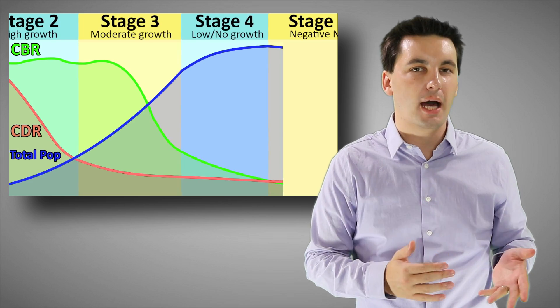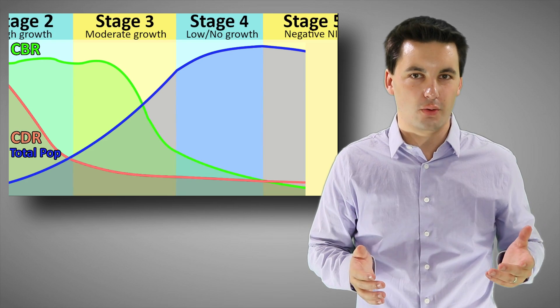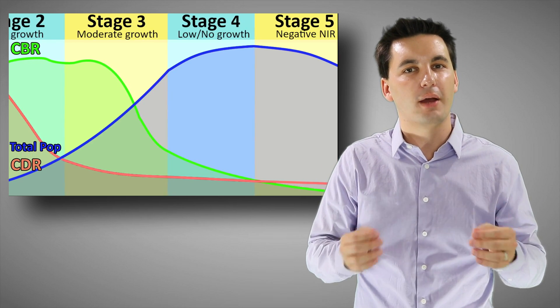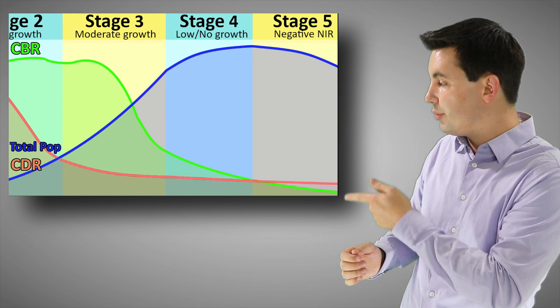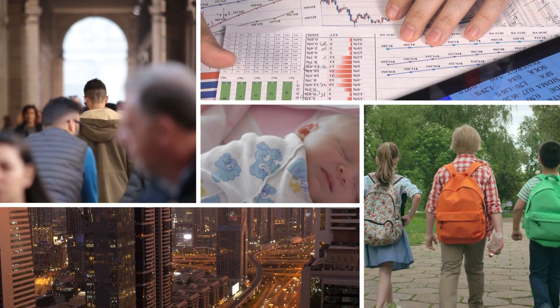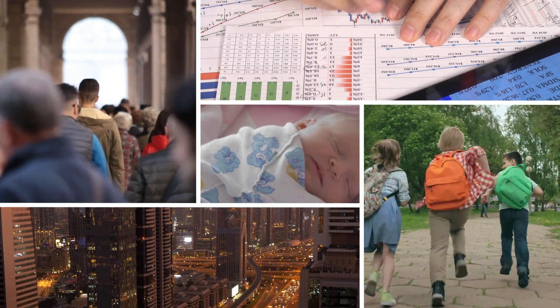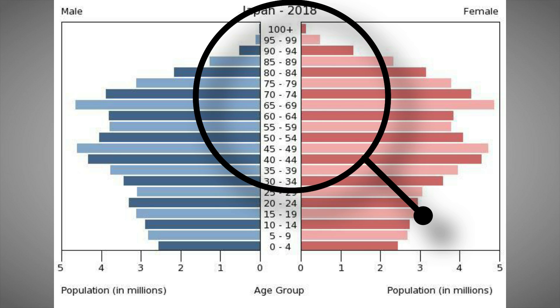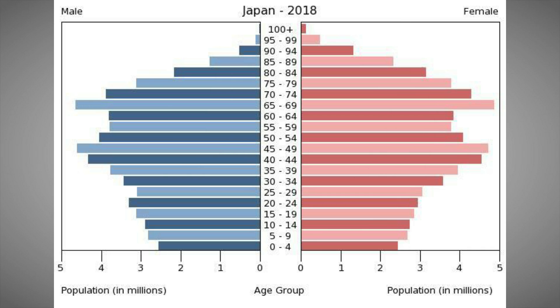Stage five was not originally in the model and is defined by negative growth. Society has become so developed and culture has shifted so much that family size is now below the replacement rate — the average TFR of 2.1. Births are lower than the death rate, so population is starting to decrease. Reasons include cultural preferences, government policy, urbanization, economic factors, and people preferring work or travel over large families. Japan is an example, where the population has aged, most people are in post-reproductive years, and family size has dipped below replacement rate.